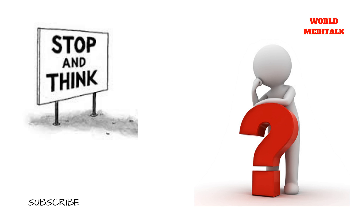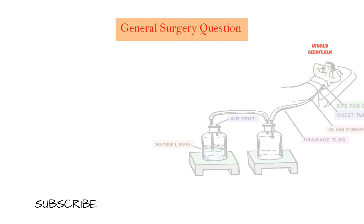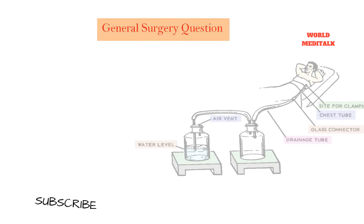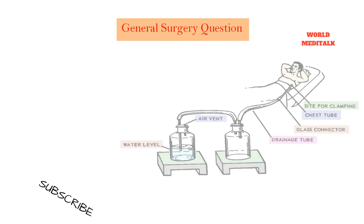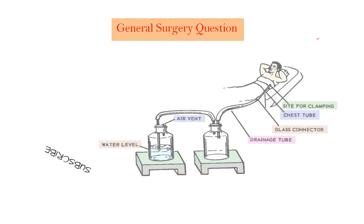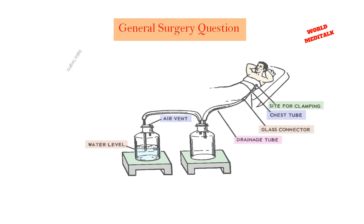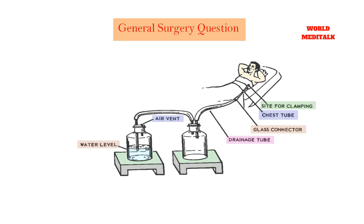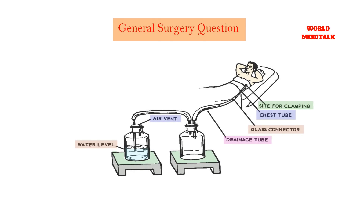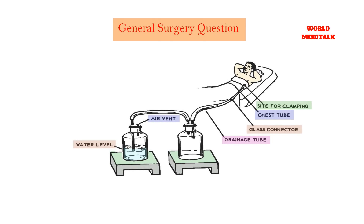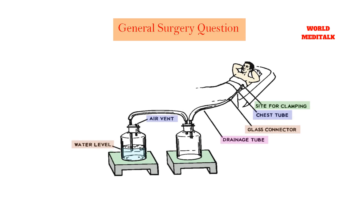The answer is intercostal tube drain insertion. This patient requires a chest drain and analgesia. In general, all haemopneumothorax should be managed by inserting intercostal chest drains, because these patients have a high risk of developing tension pneumothorax until the lung laceration has sealed.